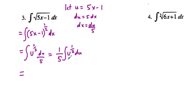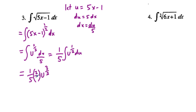That's going to equal one-fifth — we bring the 5 out front — so we have one-fifth times the integral of u to the one-half power du. Now integrating: we have one-fifth times u raised to one-half plus one, which is 3 over 2, and we divide by 3 over 2, which is the same as multiplying by 2 over 3, plus C.